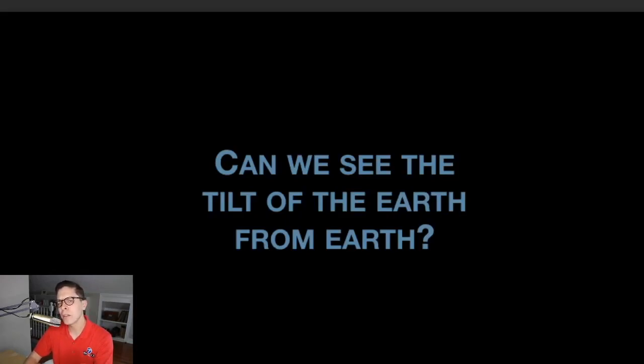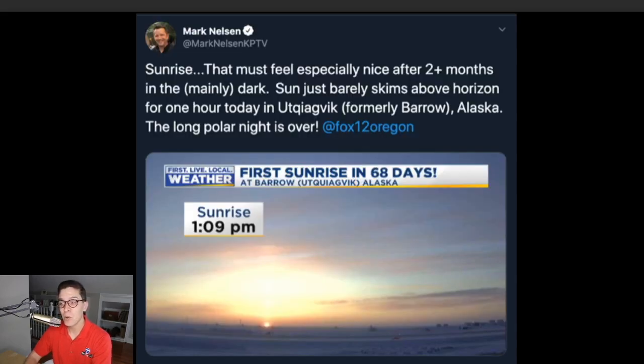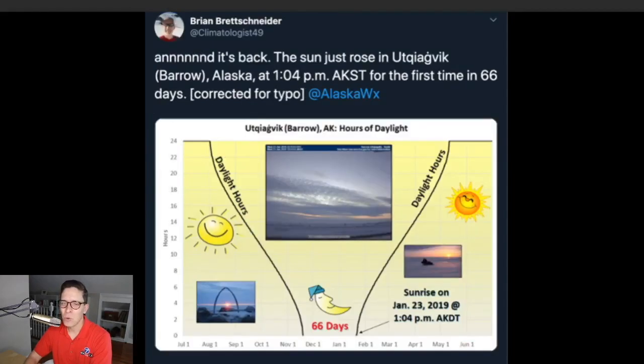Now, can you see this tilt from the earth? Well, you can basically deduce it, or you can basically make a conclusion that the earth is tilted just based on what I showed you earlier, how the angle of the sun in the sky changes throughout the year. But in Alaska, in Northern Alaska and parts of the Northern Hemisphere near the Arctic Circle, very close to the North Pole, they have darkness for two whole months. The sun never rises. And this tweet was sent out back in January, January 23rd. They had the first sunrise in the northernmost part of the United States, in Northern Alaska, in 68 days. And the sun rose that afternoon at one o'clock in the afternoon.